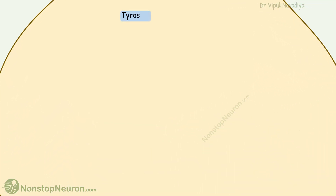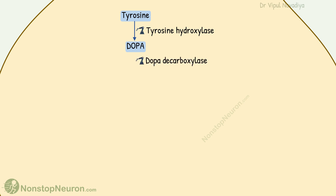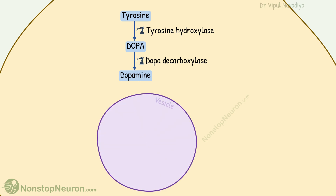The neurotransmitter noradrenaline is synthesized from tyrosine. Enzyme tyrosine hydroxylase converts tyrosine into dopa. Then dopa decarboxylase converts dopa into dopamine. The synaptic vesicles in the nerve terminal have a transport protein called vesicular monoamine transporter, or VMAT, which moves dopamine from the cytoplasm into the vesicle.